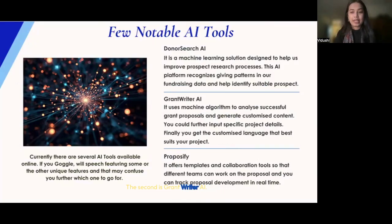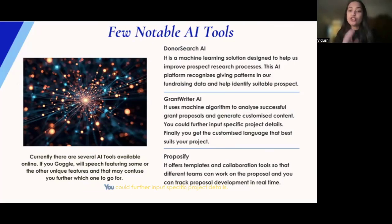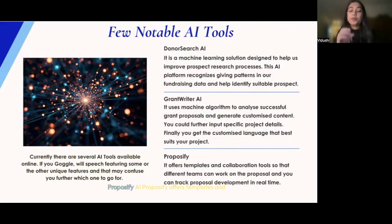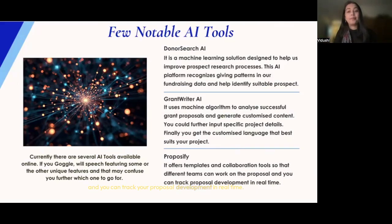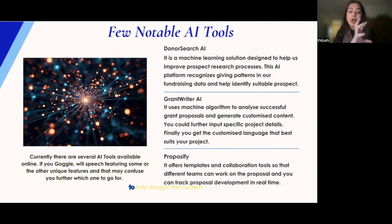The second is GrantWriter AI. GrantWriter AI uses machine learning algorithms to analyze successful grant proposals and generate customized content. You can input specific project details and get customized language that best suits your project. Third is Proposify AI — Proposify offers templates and collaboration tools so different teams can work on the proposal and track development in real time. Proposify has also introduced an AI proposal generator that leverages ChatGPT to help draft content, though this feature is still evolving.